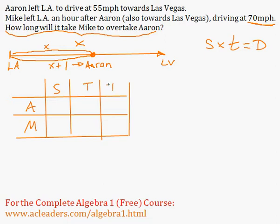Speed, time and distance. So as we mentioned, x is the amount of time that it's gonna take Mike to get to that point where he overtakes Aaron. And Aaron drove for an hour longer since he left earlier just to get to the same point.